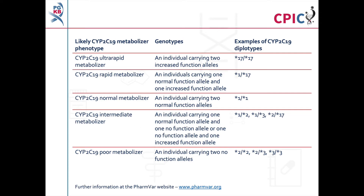There are currently over 30 defined alleles of CYP2C19, known as star alleles. Star alleles are characterised by their rate of function relative to the star 1 allele, which is designated as a normal function allele. Diplotypes of CYP2C19 star alleles can be assigned to a metaboliser phenotype, as shown in this table and in table 1 of the guideline.